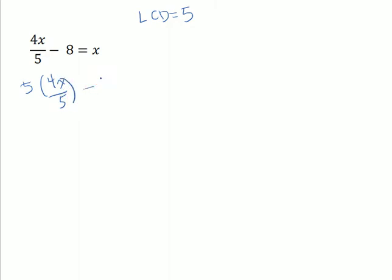Every term gets multiplied by 5. 5 times 4x over 5 is 4x. 5 times 8 is 40, and we get 5x.